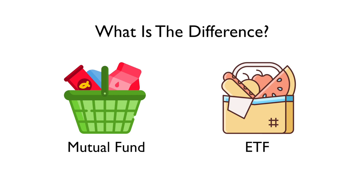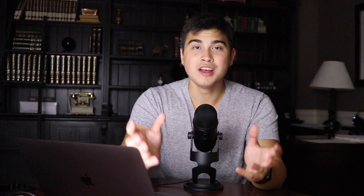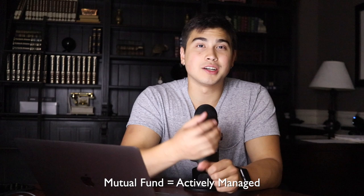Let's start by differentiating. We'll talk about the difference between a mutual fund and an ETF, because although they are very similar in the sense that they're both baskets of assets, they're actually quite different. The best way to differentiate the two is to look at it in terms of active management and passive management. Those are two investment strategies you'll hear when it comes to the investing scene — active and passive.